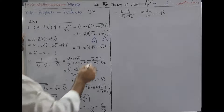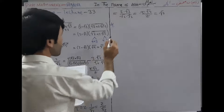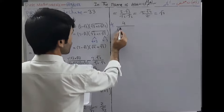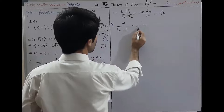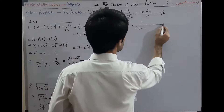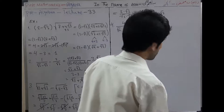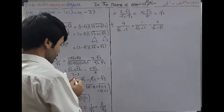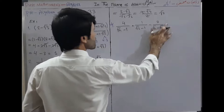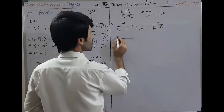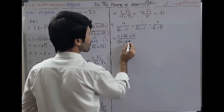Question 4: we have 4/(√5 - 1) + 1/(√2 - 1) - 3/(√5 - √2). We want to simplify this question. We rationalize the first term: 4·(√5 + 1) over (√5 - 1)(√5 + 1).